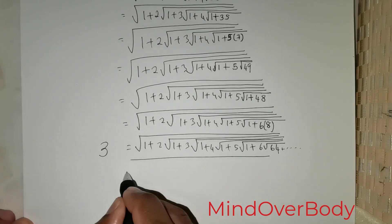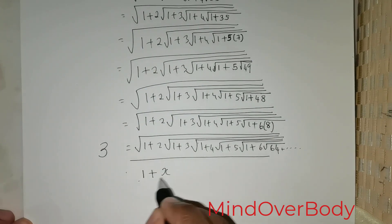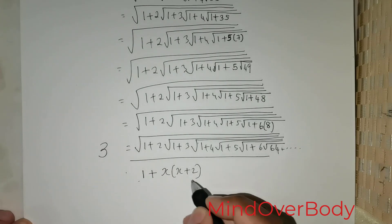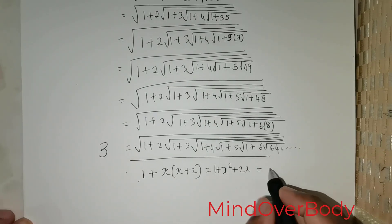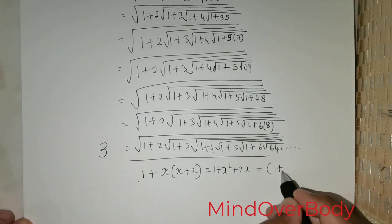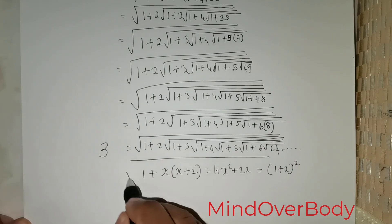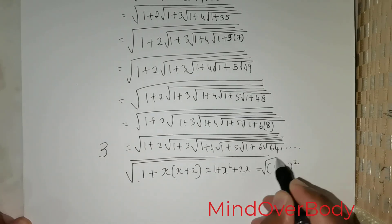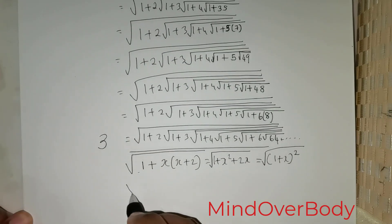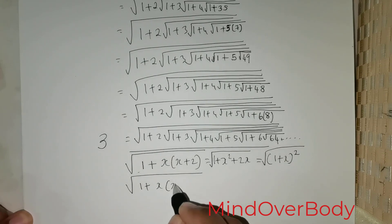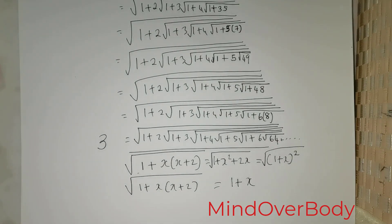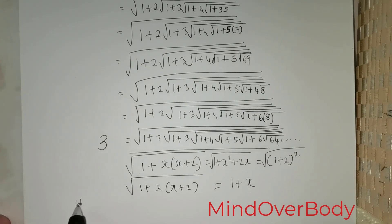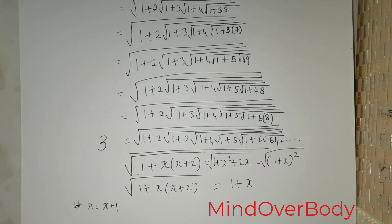So let me consider a term of this fashion: since I have a 1 here, I would like to have 1 + x(x+2). This is going to be 1 + x² + 2x, which is nothing but (1+x)². If I take the square root of both sides: root of 1 + x(x+2) = 1 + x. That is the key identity.